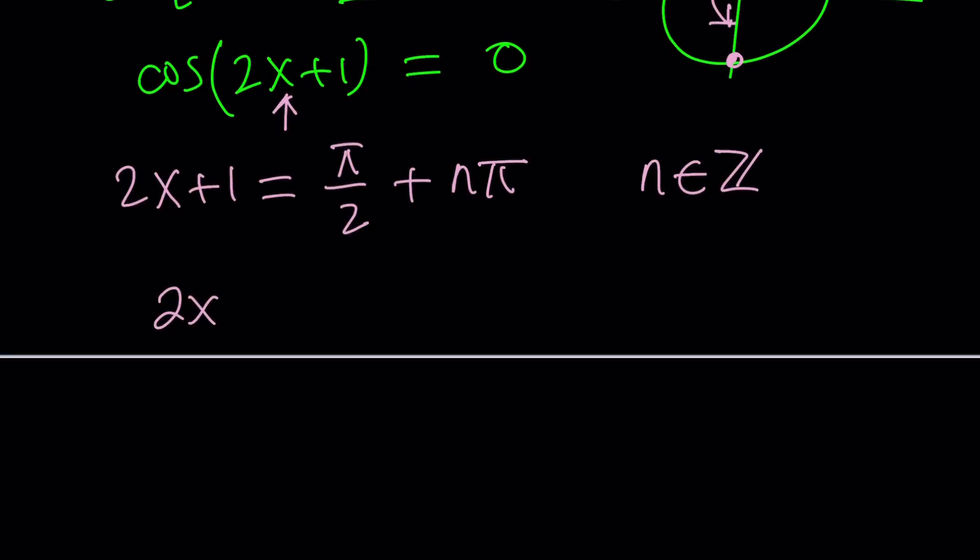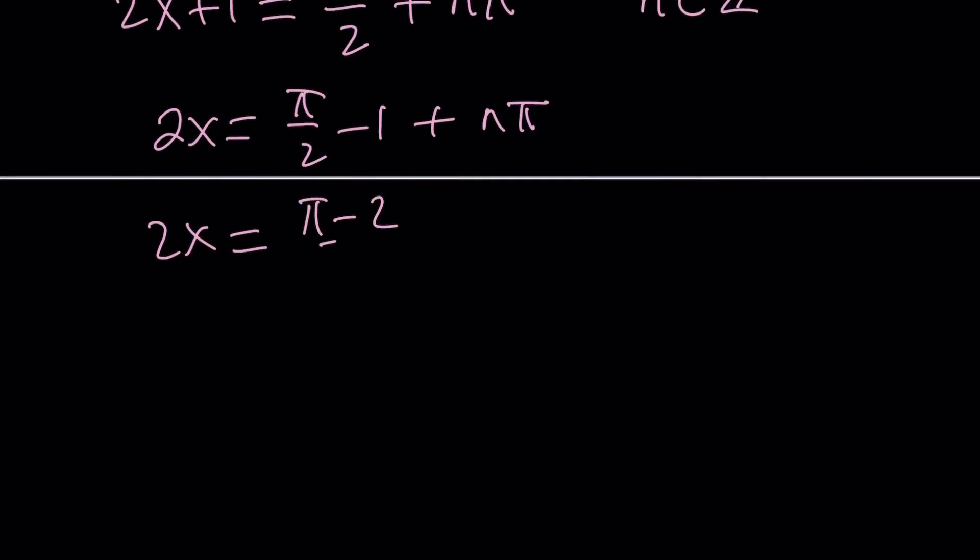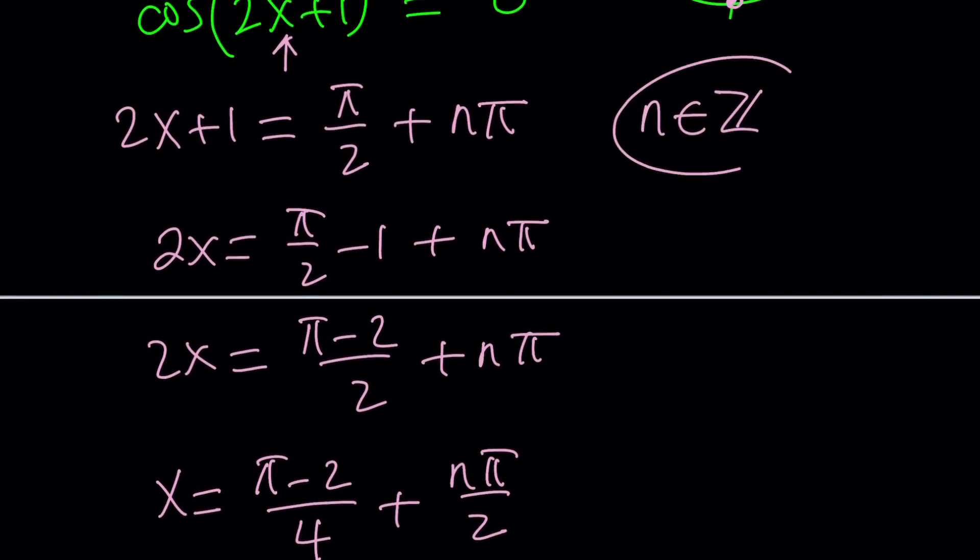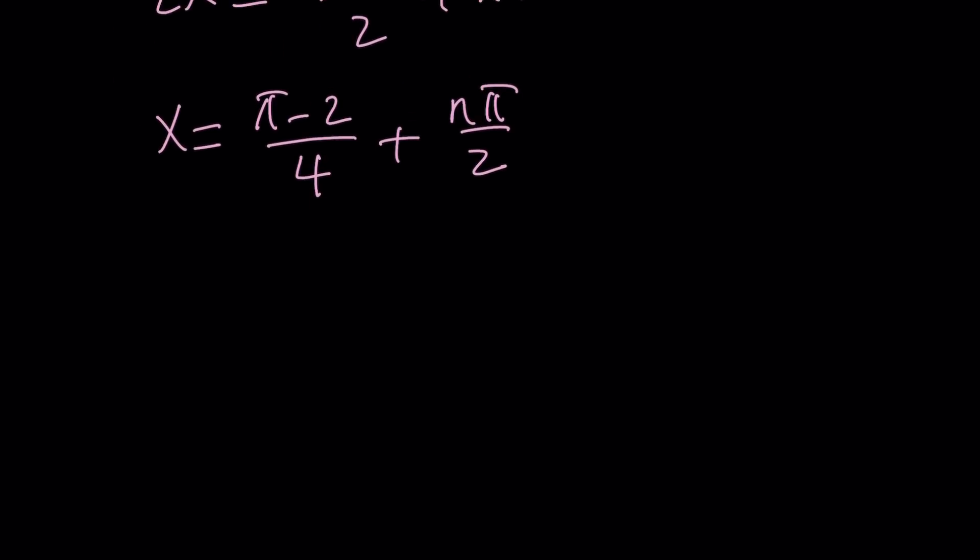So, let's go ahead and do this. Subtract 1. And, then, we're going to divide everything by 2. But, before we do, let's go ahead and make a common denominator. Now, this can be done in so many different ways. You can include the pi's. You can put the pi's together. You can make a common denominator for the whole thing. And, this will become pi minus 2 over 4 plus n pi over 2. So, those are the solutions. That's basically the general solution where n is an integer.